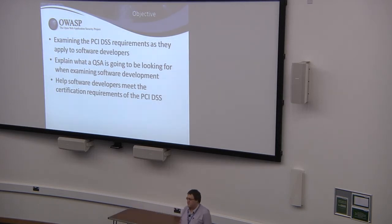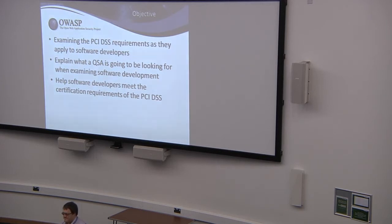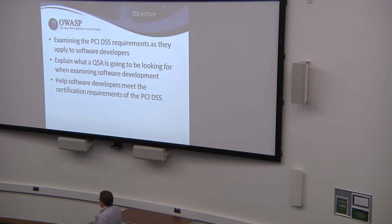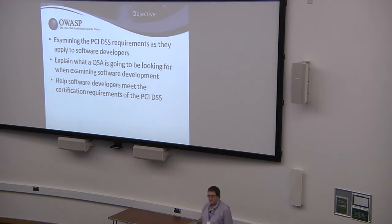I'm also going to explain what as a QSA I'm looking for — which is actually evidence that you are doing things. That's not just a policy document saying we've got a secure development environment. I want to see evidence that it is secure, because if I don't see it as an auditor, I will fail. And I'm going to look through some of the things I've found and make some notes about key practices I find that help organisations — really going through what I'm expecting to see in terms of secure development.